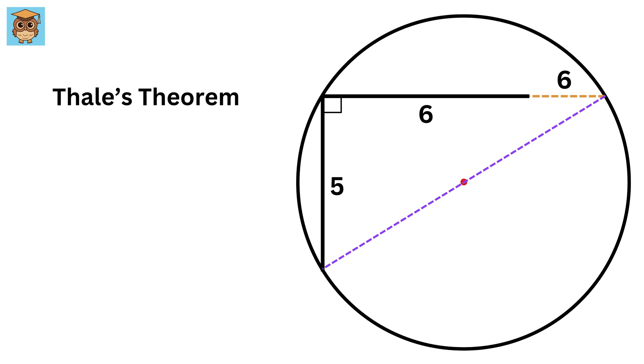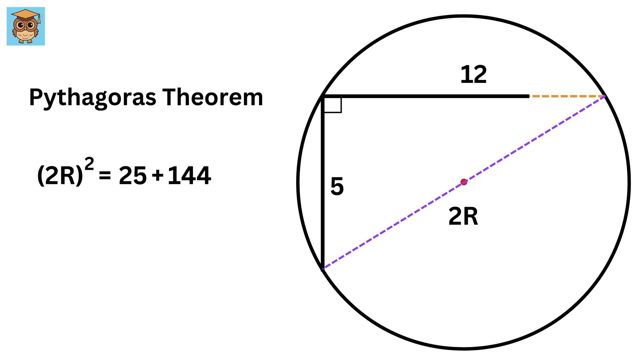So this hypotenuse will be 2 times the radius r, and this is 12 and this is 5. We will now use Pythagoras' theorem such that (2r)² equals 5² plus 12², or 25 plus 144,